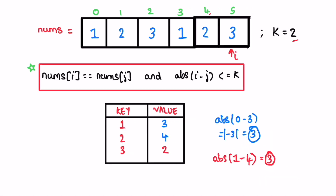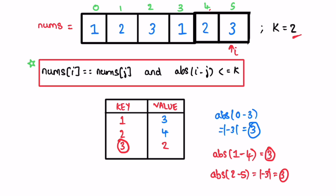Next iteration: i is pointing at 3. We check if 3 is present inside the map — yes it is. We find the absolute value: its last occurring index was 2 and its current index is 5, which equals 3. We check if 3 is less than or equal to 2 — no, it is not. So we update 3's value with the last occurring index, which is 5. We have now reached the end of the array and haven't found any satisfying pair, so we return false as the output.